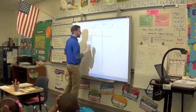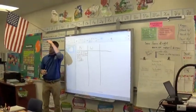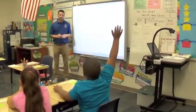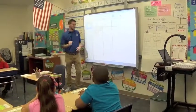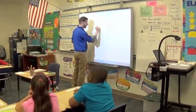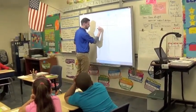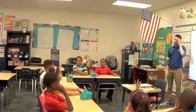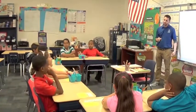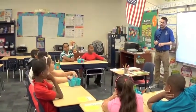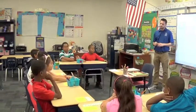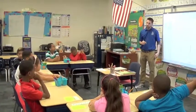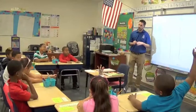So the second part of the KWL chart is the W — what do you want to know about the International Space Station? About the doors — what they're called. What else would you like to know? I want to know if they go outside to explore the planets. So the astronauts — do you want to know if they go outside?